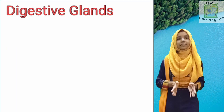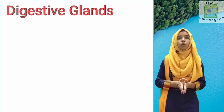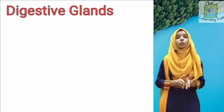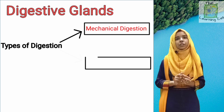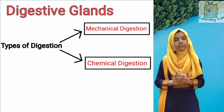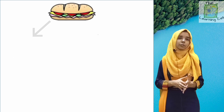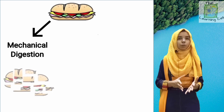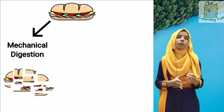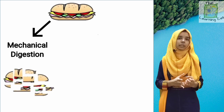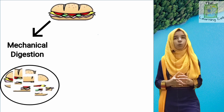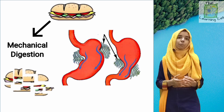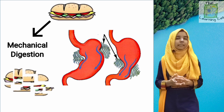Now we need to know what are the two types of digestion: mechanical digestion and chemical digestion. Mechanical digestion is a physical process. For example, when we chew food, we convert the larger particles into smaller particles. Another example would be churning of food by the stomach. In both of them there is no chemical change.